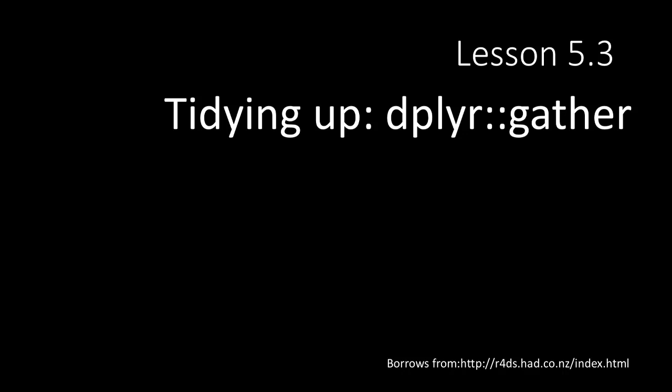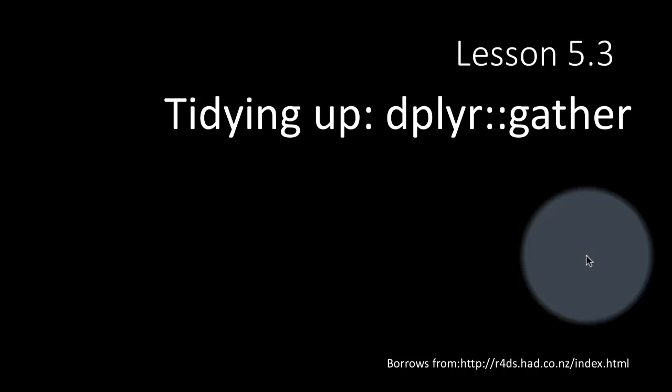We've already seen that in order to perform analysis of data conveniently using the functions provided by dplyr, we would like the data to be in a certain form — what we are calling tidy data. Quite often when we get the data, it may not be in a suitable form to apply dplyr functions. So we go through a process of tidying up the data. The dplyr library provides several useful functions to reshape the data, and we'll be looking at the gather function.